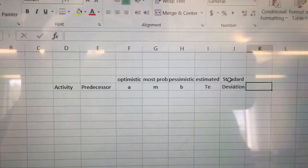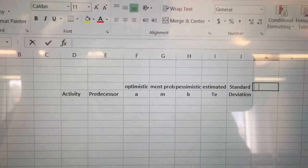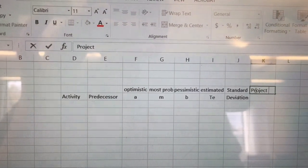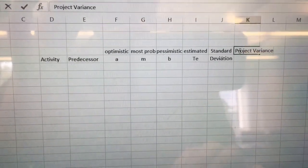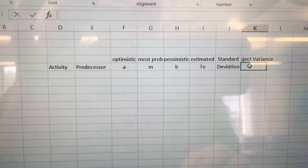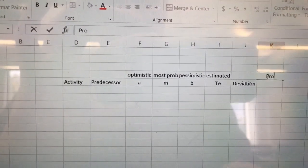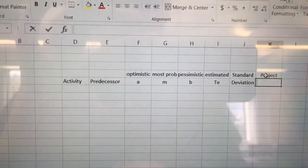After I have those times down the next thing I'm going to want to calculate is what my estimated time is. My estimated time is going to be represented by Te. In order then to answer the questions I want to answer I'm going to need a standard deviation, and not only a standard deviation but we have to turn that standard deviation into a project variance.